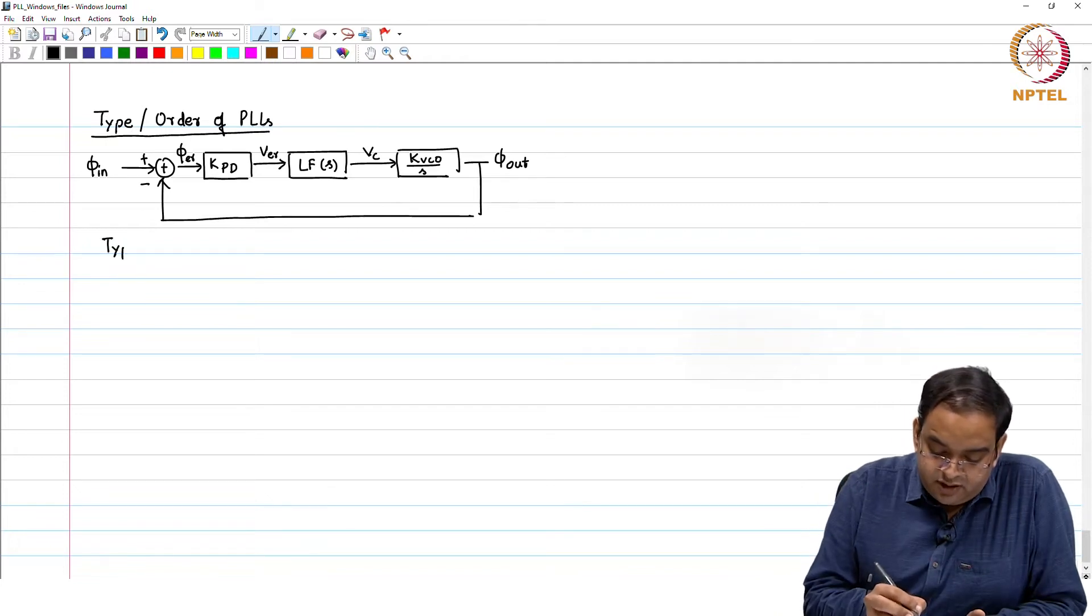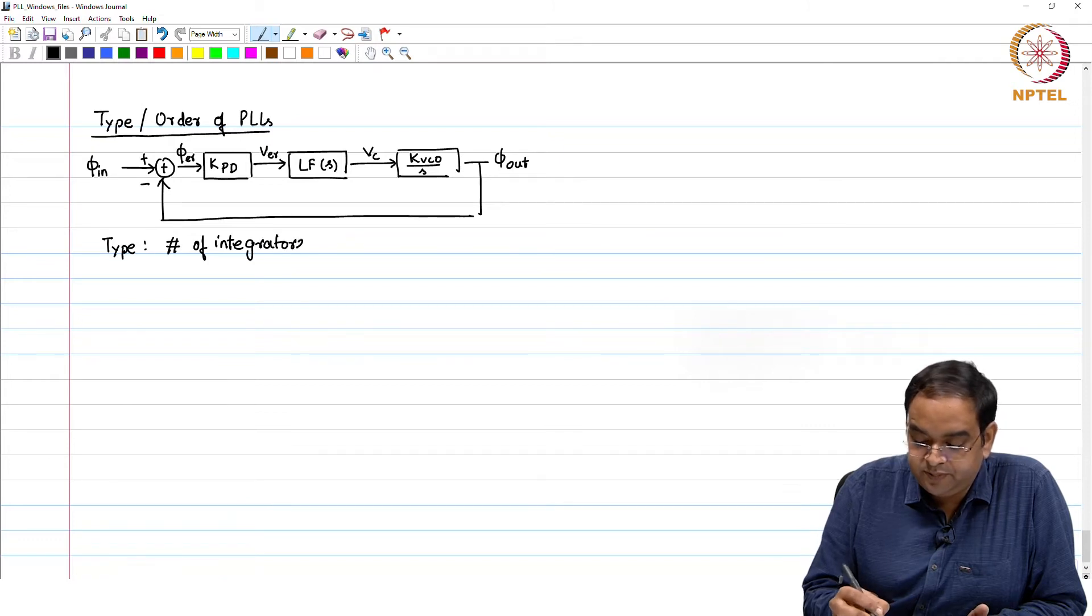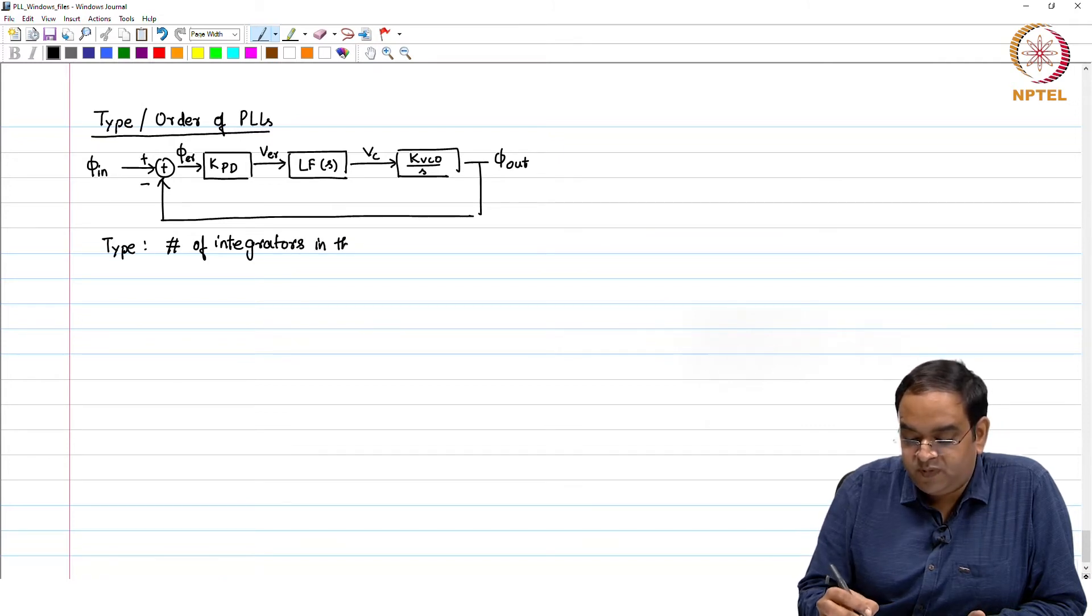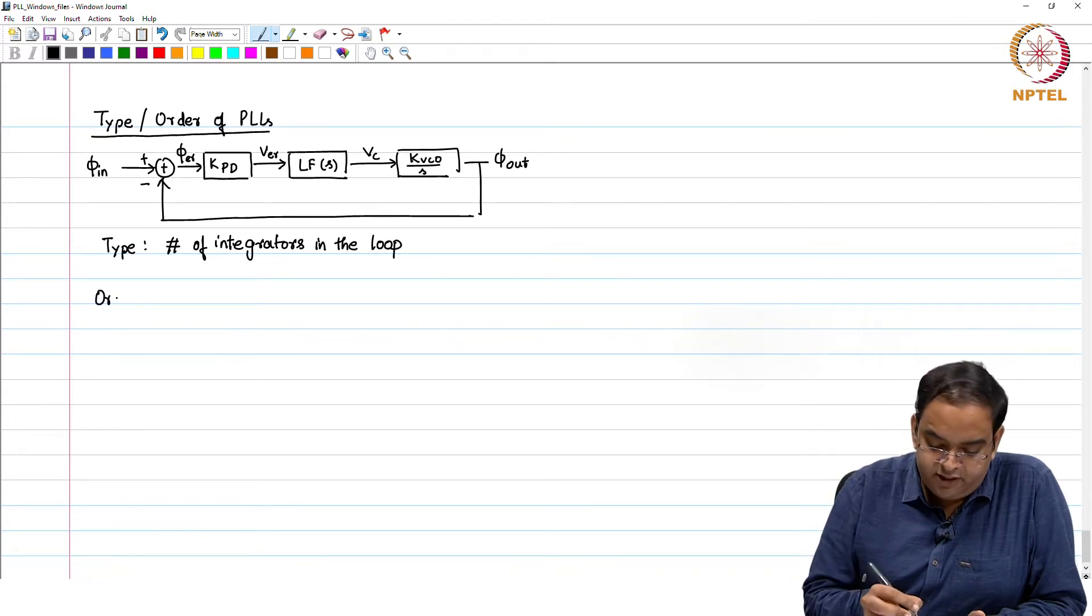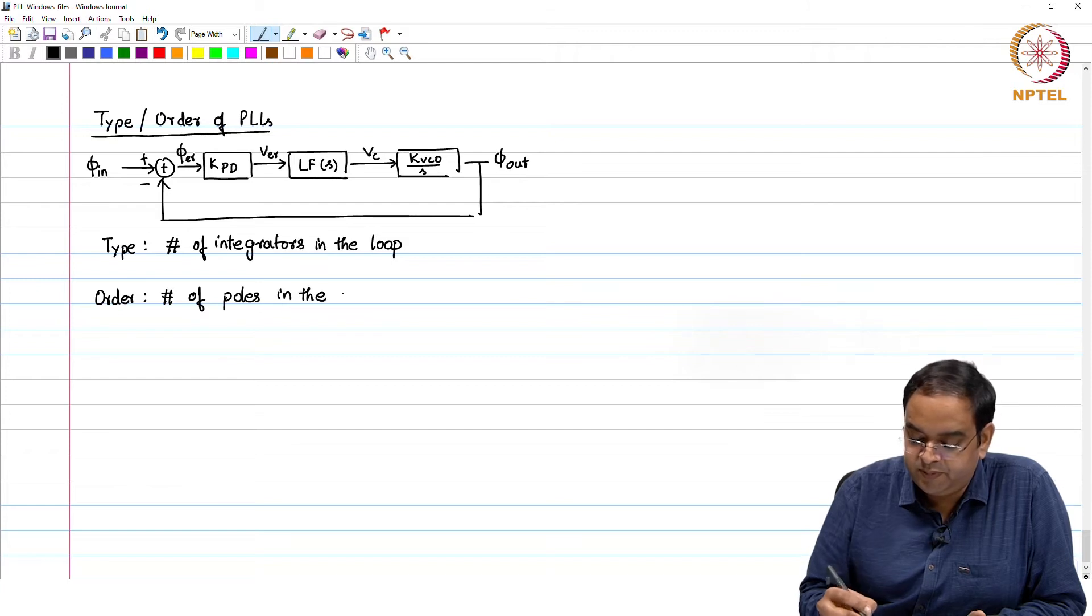The type is defined as the number of integrators in the PLL loop. And order is defined as number of poles in the loop.